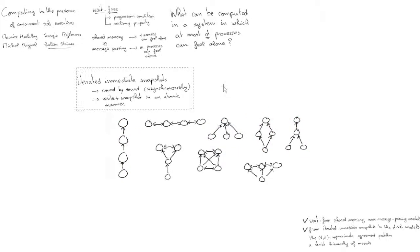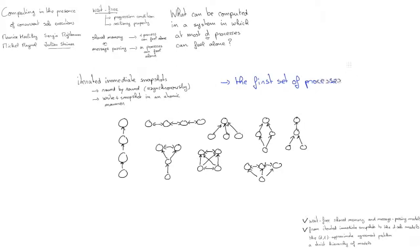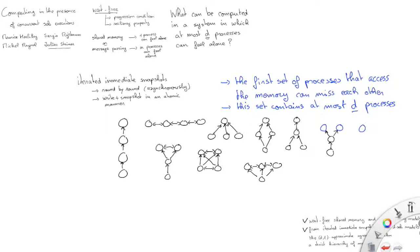Now to define our DSOLO models, we are going to add the property to the iterated immediate snapshots model in order to allow more behaviors for the communication object of the round. So for example, we can say that the first set of processes to access the memory can miss each other, but they can't be more than D processes. So for example, if we add the new behaviors for four processes with D equals to two, we add these possibilities. So two solo processes, then all the usual possibilities.